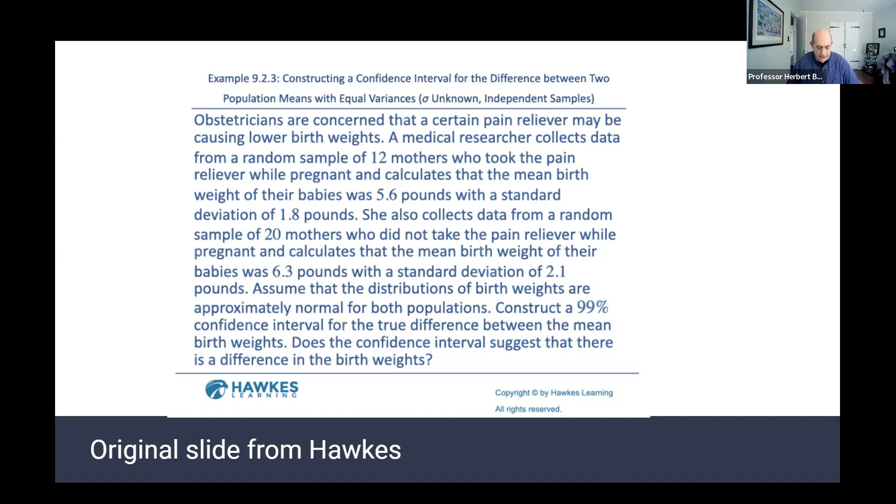So what I have done is sometimes I will go through and underline. So what are the relevant parts of here? It's a random sample, 12 mothers, pain reliever while pregnant, all the way down. And what is it they want us to do? Because that's also the thing that students often get confused. What is it that they're being asked? They're being asked to construct a 99% confidence interval. So with this sort of framework, they have a better understanding of what they need to do and how to get it into their calculators.